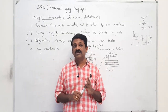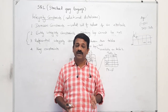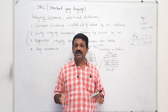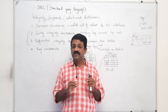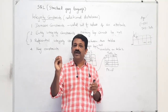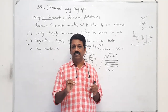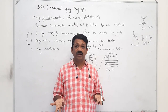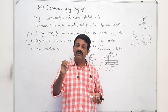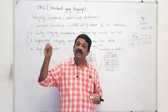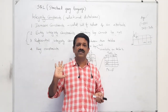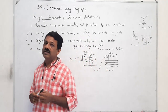To recap: entity integrity means that a primary key cannot be null. Referential integrity means that when inserting data into a table which has a foreign key, the value of that foreign key attribute should either be null or, if it has a valid value, there must be a corresponding entry in the referenced second table. That covers all integrity constraints.